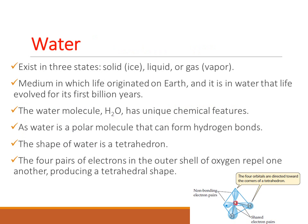Water exists in three states: solid, liquid, or gas in the form of vapor. Life evolved for its first billion years in water, and it was believed that life originated in water for the first billion years. Water has unique chemical features — it is a polar molecule that can form hydrogen bonds. When we talk about the shape of water, it is tetrahedral in structure.